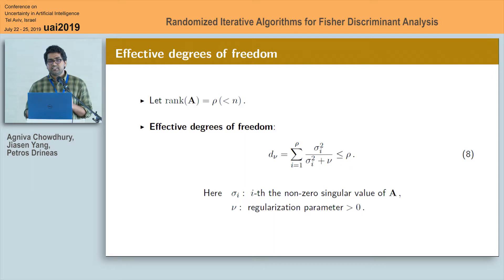Now, note that this d_nu is always upper bounded by rho, however, it can be much smaller than that depending on the distributions of sigma i's as well as the specific choice of lambda.